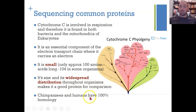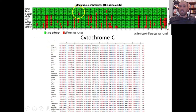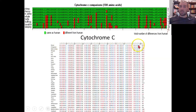For example, chimpanzees and humans have exactly the same cytochrome C — no difference in amino acid sequence. Looking at the 104 amino acids in cytochrome C across several species, we can see there's one difference between a chimp and a rhesus monkey, suggesting they're fairly closely related.